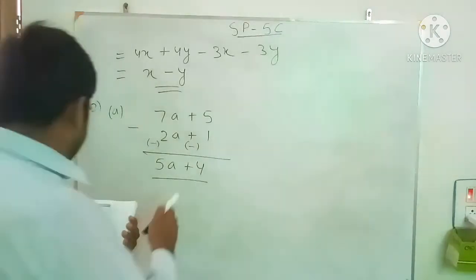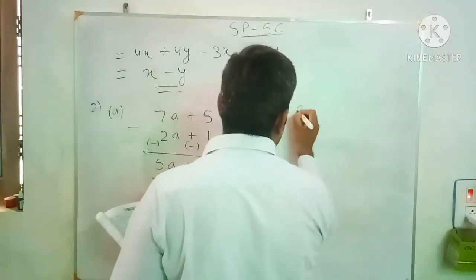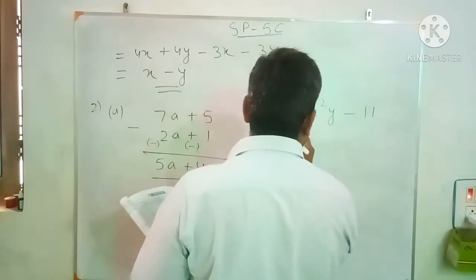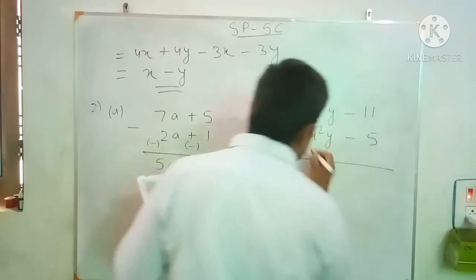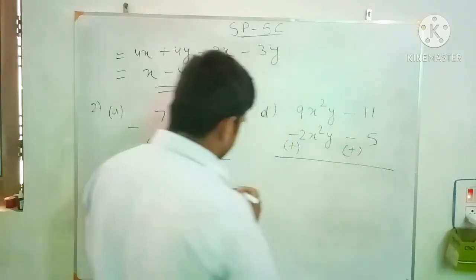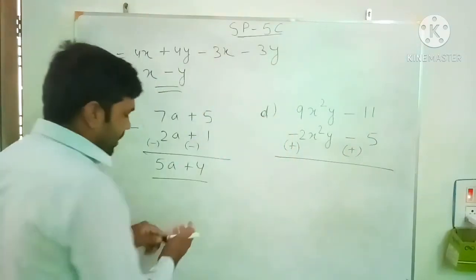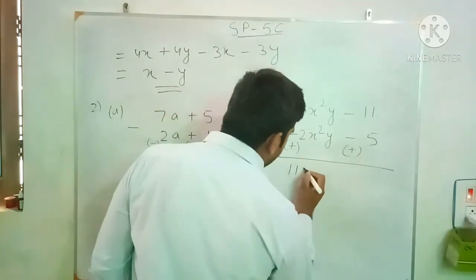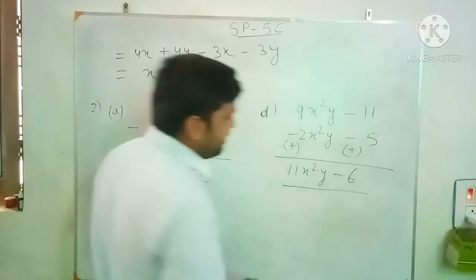Now question 2d. Upper expression is 9x²y minus 11, lower expression is minus 2x²y minus 5. We have to subtract the lower expression, so change the sign of each term. Minus 2x²y becomes plus 2x²y, and minus 5 becomes plus 5. So 9 plus 2 gives 11, giving 11x²y. And minus 11 plus 5 gives minus 6. The answer is 11x²y minus 6.